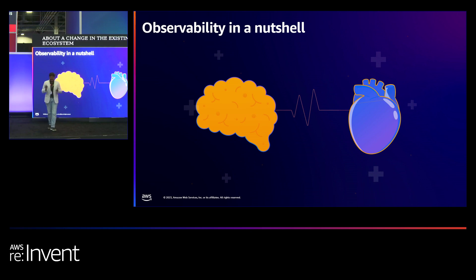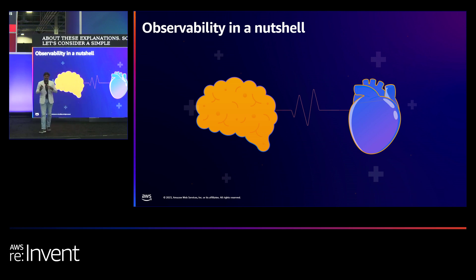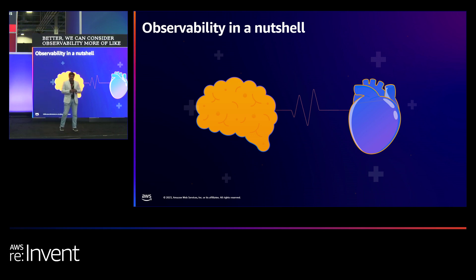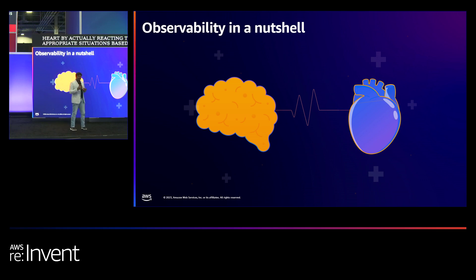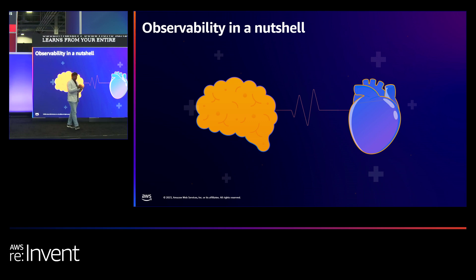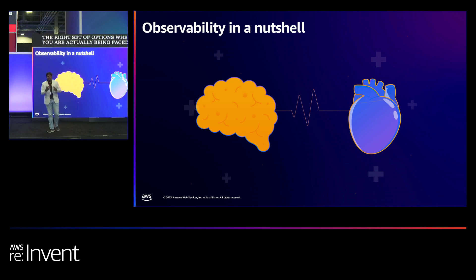That is all kind of gibberish, right? It's pretty complicated to hear these explanations, so let's consider a simple scenario. We can consider observability more like the brain in the human body. The brain takes care of the effective functioning of the heart by reacting to appropriate situations based on past experiences. In a similar manner, observability solutions learn from your entire ecosystem and provide you with the right set of options when you face a situation similar to something that happened in the past.